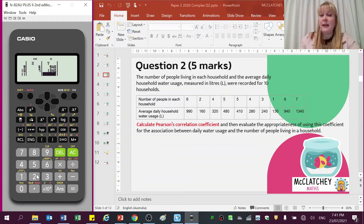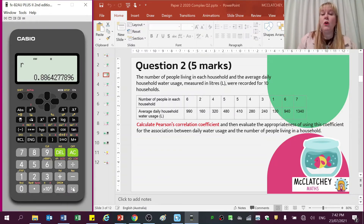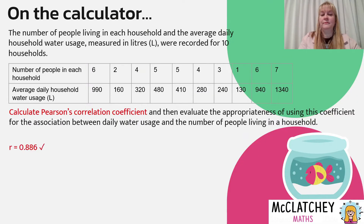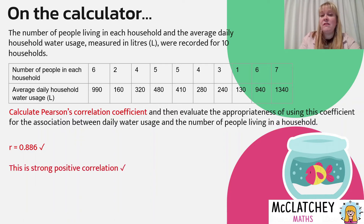Now I've got all of my data in the calculator. I press the All Clear button — it will sit in the background. I access the Statistics function by pressing Shift, then number 1. I'm looking for menu 5 — Reg — and I go straight to calculating R by pressing 3. R's value is 0.886. So if I was drawing a scatter plot, I'd be looking for a very strong correlation. Our first mark was awarded for stating R equals 0.886. It was only a single mark, so using the calculator was perfectly fine. Our second mark was for stating this represents a strong positive correlation.